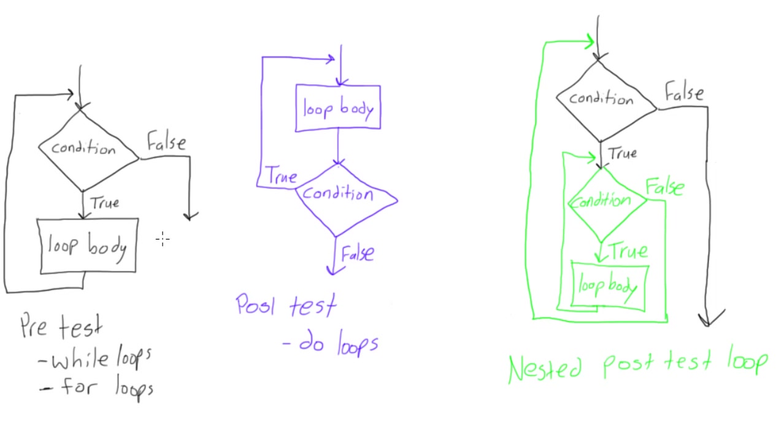So anyways, the first one here, the black one, this is a pre-test loop. Flowchart works for either for loops or while loops. If you click on the video and watch it, we made an investment calculator and we're working towards doubling our money.